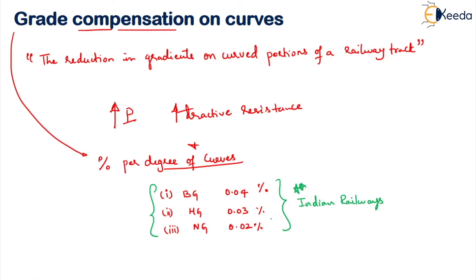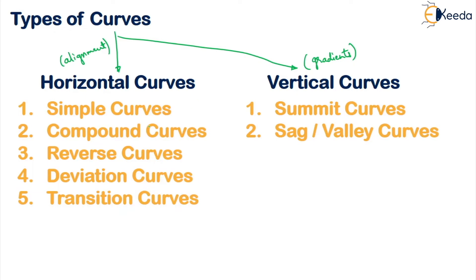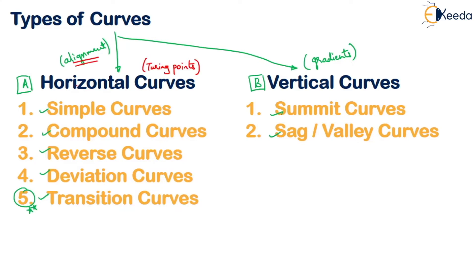Now we will discuss the types of curves. Basically, curves are divided into two types: horizontal curves and vertical curves. Horizontal curves are provided for change in alignment, and vertical curves are provided for change in gradient. There are five types of horizontal curves: simple, compound, reverse, deviation, and transition curves — of which transition curves are the most important in railways. For vertical curves, there are two types: summit curves and sag or valley curves.